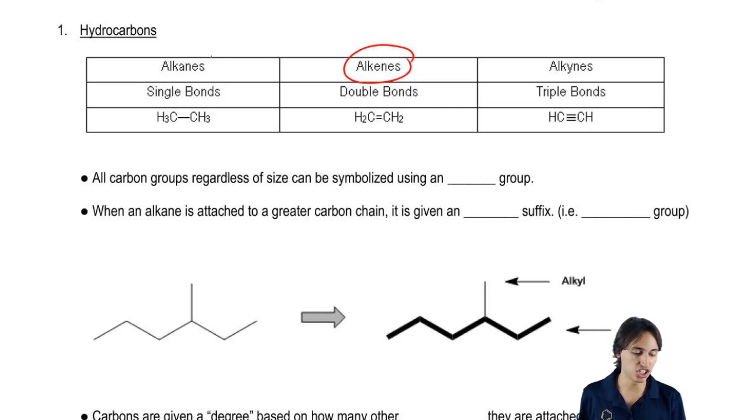You can tell all that's changing is really one letter: A, E, Y. As you get further in the alphabet, you're adding more bonds. Not too bad.